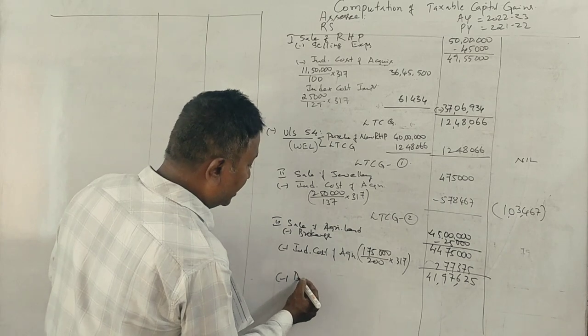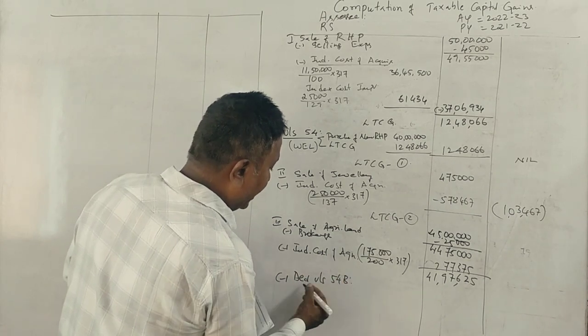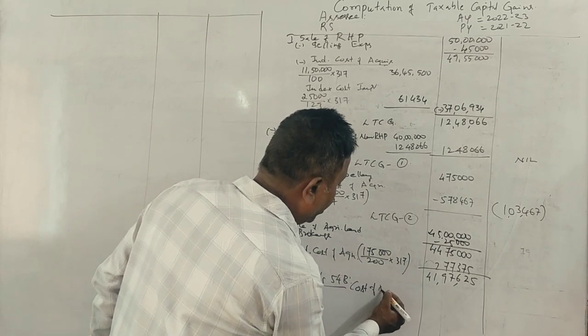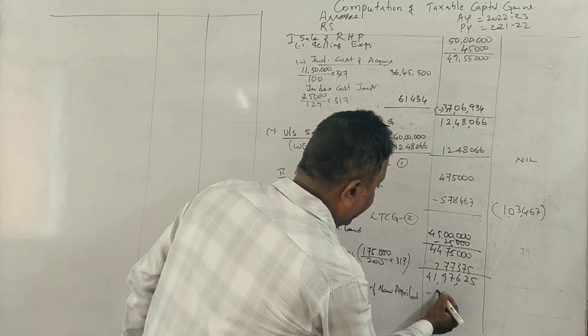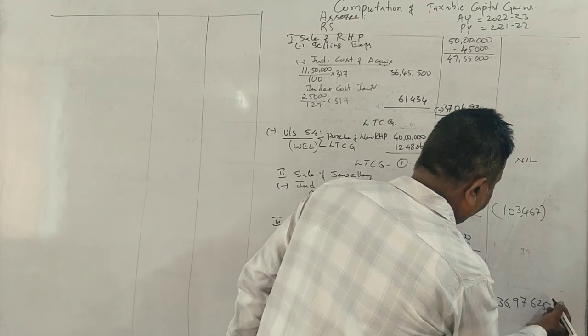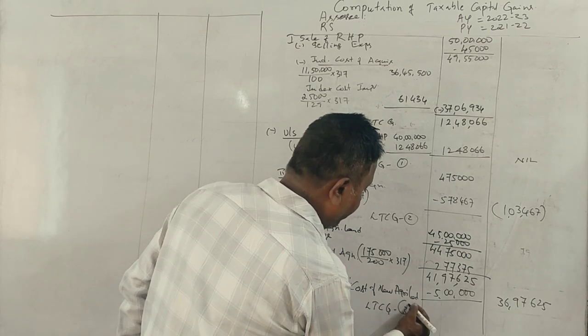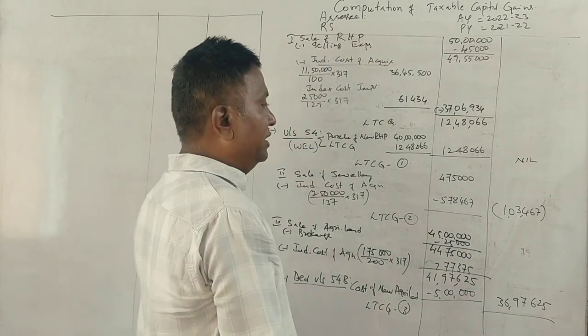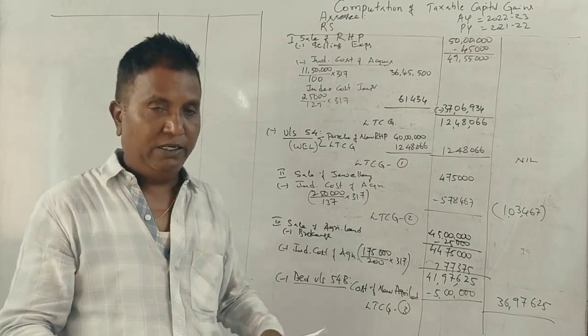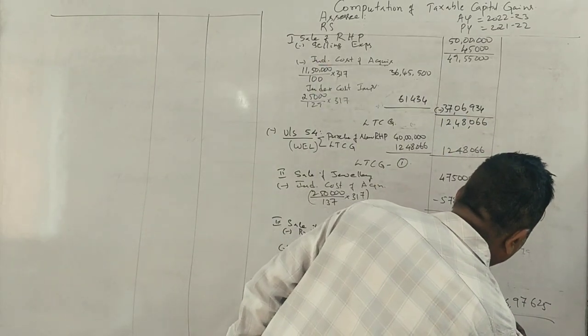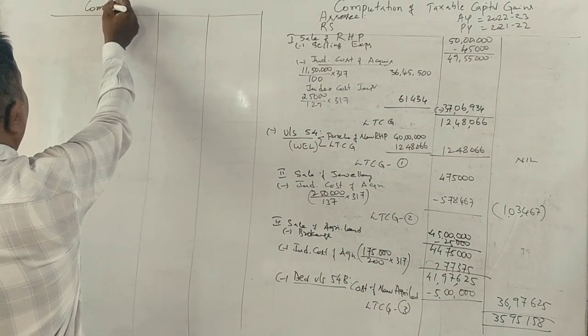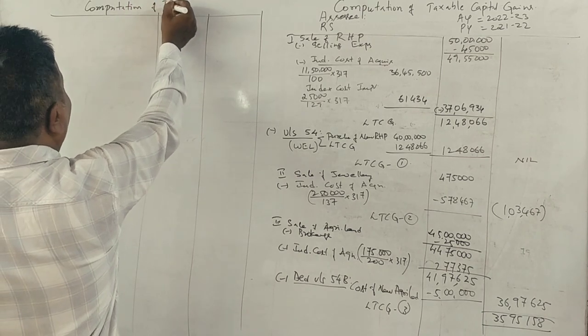Here is the deduction under Section 54B, which applies to agricultural land purchase. The cost of new agricultural land is 5 lakh. I will get exemption of 5 lakh, leaving 36,97,625 as long-term capital gain. This is the cost of the new agricultural land.